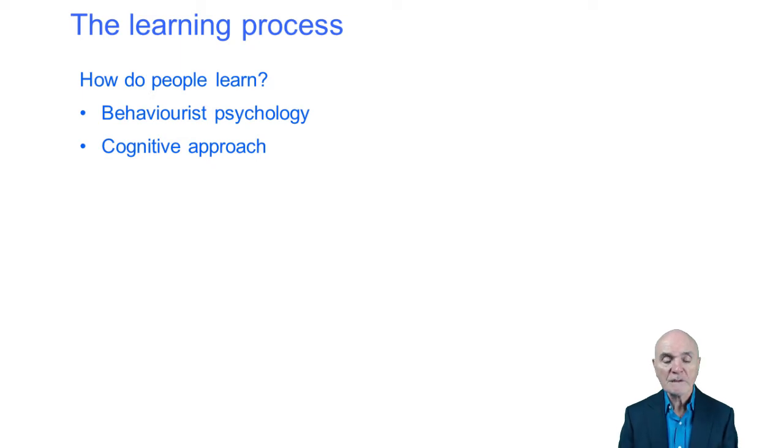This chapter looks primarily at how people learn. The first idea is two different approaches to understanding learning: the behaviorist psychological approach and the cognitive approach.